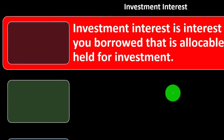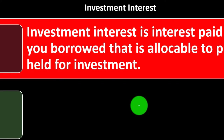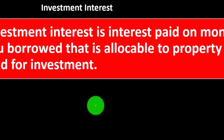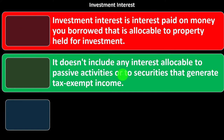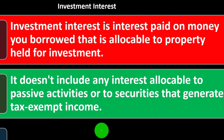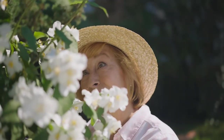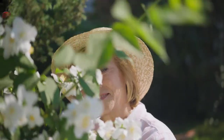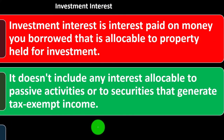Investment interest is interest paid on money you borrowed that is allocable to property held for investment. So you're putting money into an investment and taking out a loan to do so, making the borrowing cost — the interest — possibly deductible. We're looking at this as a Schedule A itemized deduction. It does not include any interest allocable to passive activities or securities that generate tax-exempt income.